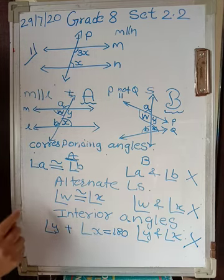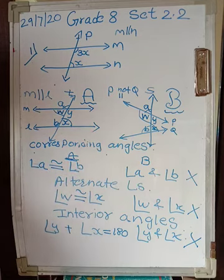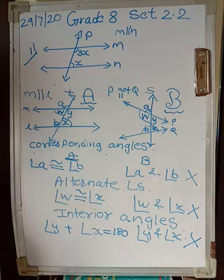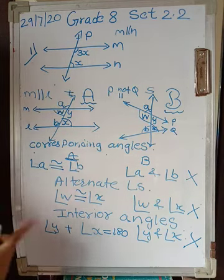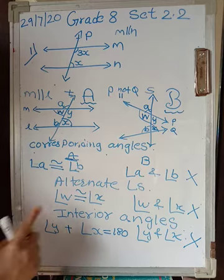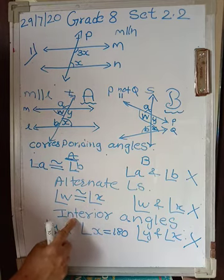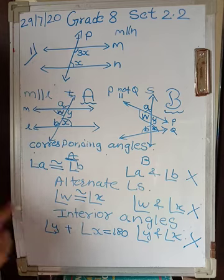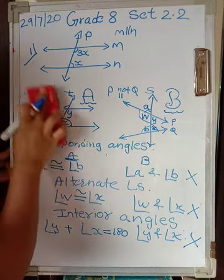Unless and until you know these three properties, it is difficult to solve Set 2.2. Keep these three properties in mind: corresponding angles are equal, alternate angles are equal, and interior angles are supplementary — if lines are parallel. With this you will be able to solve the exercises henceforth.